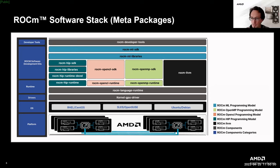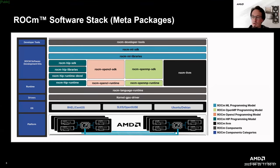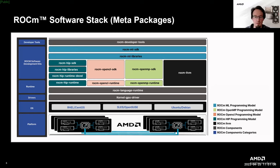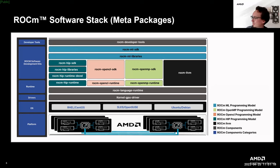At the lower level we have the ROCm language runtime, and on top of that we have different language runtimes for HIP, OpenCL, or OpenMP. Going further up the stack, we move into the ROCm software development kits and developer tools, which is where we have libraries and compilers and partly debuggers.